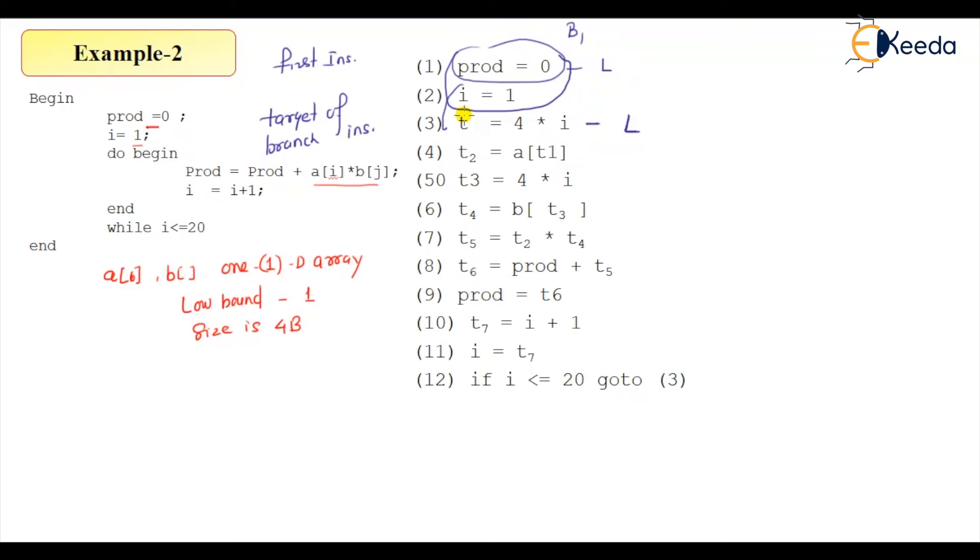And then the entire 3 to, another leader - only 2 leaders are there. So entire 3 to 12, this entire thing is your block 2. So we have only 2 blocks here, B1 and this part will be B2.